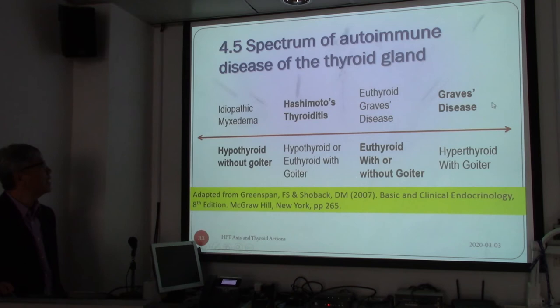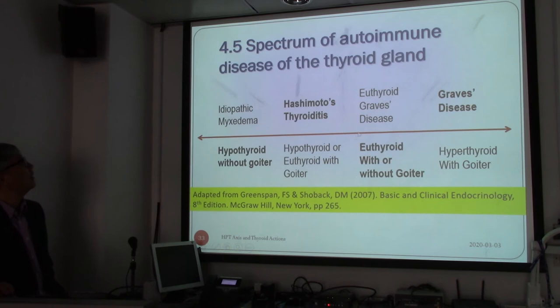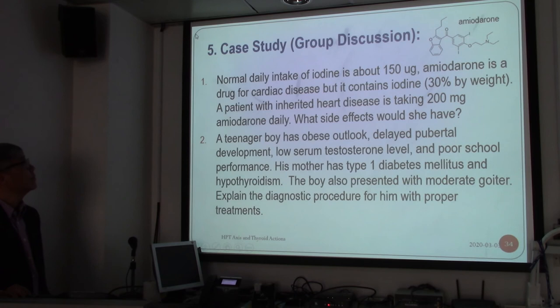To summarize, we have a slide showing Graves' disease with hypothyroid with goiter. On the left-hand side, we have hypothyroid without goiter, hypothyroid or euthyroid with goiter, Hashimoto's thyroiditis, euthyroid Graves' disease, or euthyroid without goiter. These are the different scenarios we could encounter. The inverse relationship of T3, T4, and TSH is important for giving a proper diagnosis.